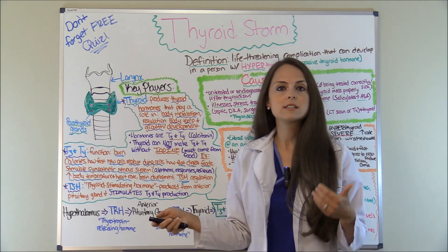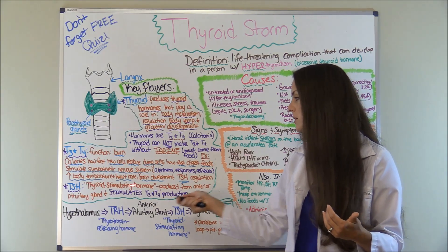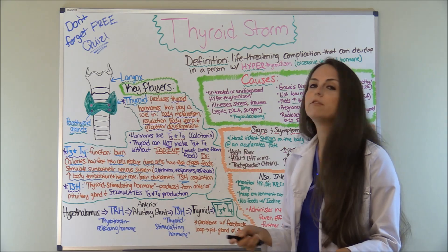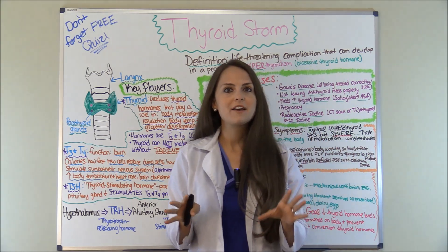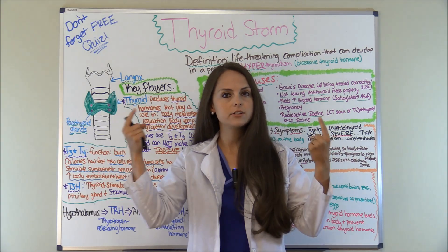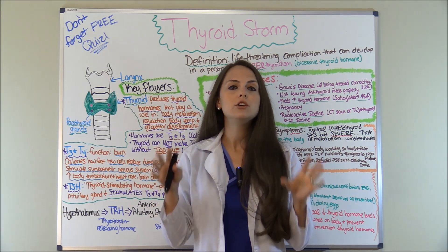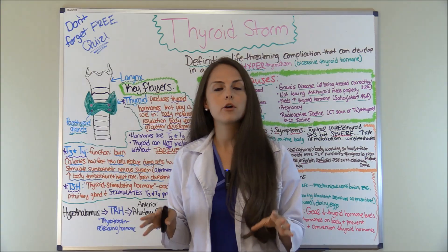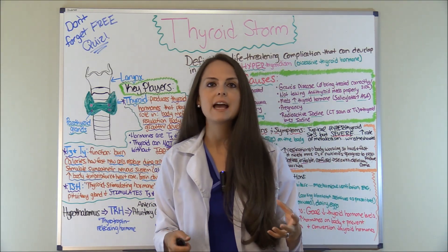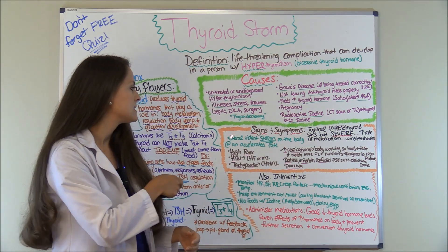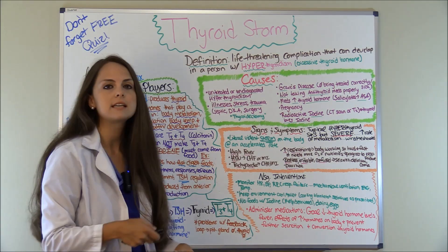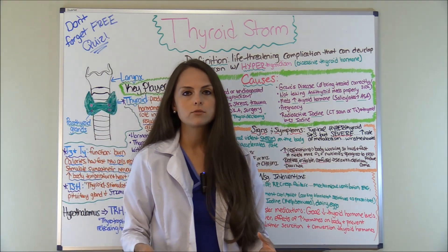TSH is a thyroid-stimulating hormone released by your anterior pituitary gland, and whenever it's released, it stimulates T3 and T4 production. So if you have way too much T3 and T4, like you do in this condition, your body is going to be working at an accelerated rate. What's going on with this condition is that it's literally like a violent storm on your body at an accelerated rate, hence the name thyroid storm.